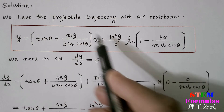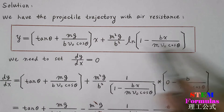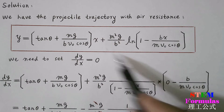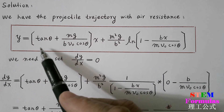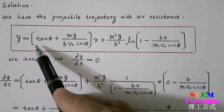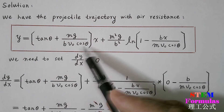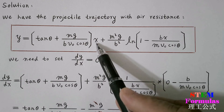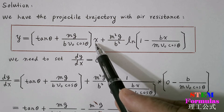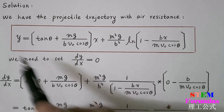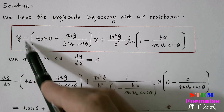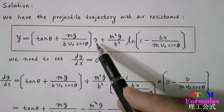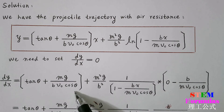y has two terms. This is the first term and this is the second term. The first term is just a factor times x, so when we take the derivative, we just get the coefficient in front of x.